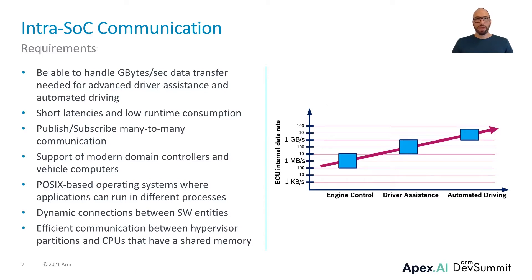Compared to engine control systems where we had to transfer data in the range of kilobytes per second, driver assistance and automated driving systems have internal data rates of up to several gigabytes per second. This data exchange must be done with low latency and low runtime consumption. This is already a big difference when comparing to a smartphone, where individual apps primarily communicate with the server and not with each other. A graph with highly meshed nodes can best be realized with a publish-subscribe middleware that supports many-to-many communication. Domain controllers and vehicle computers have POSIX-based operating systems like Linux or QNX, and the communication middleware has to support the flexibility these operating systems provide.